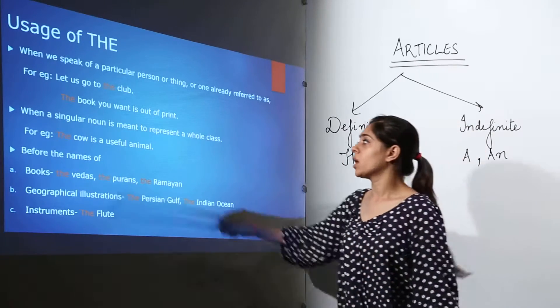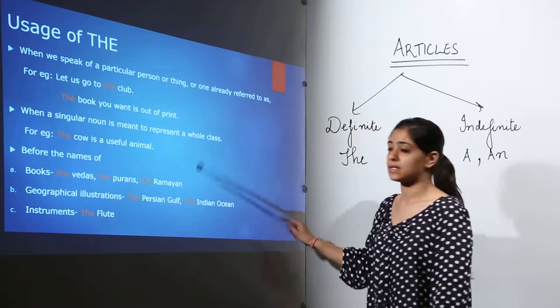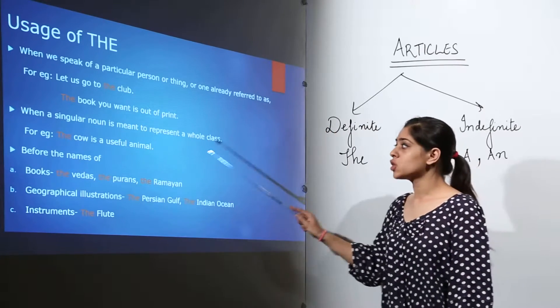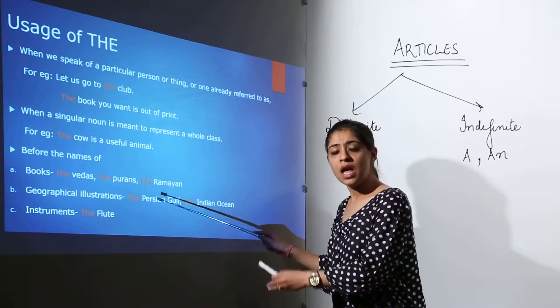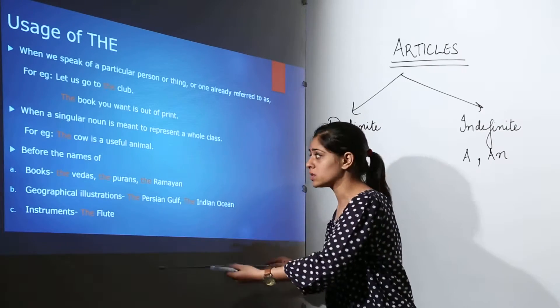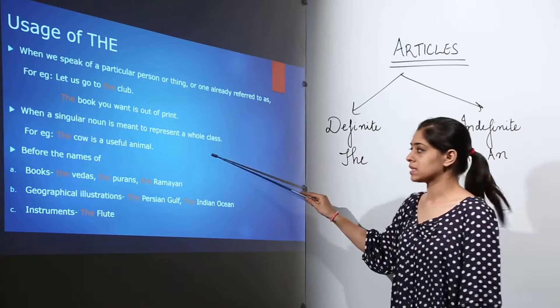The second one: when a singular noun is meant to represent a whole class. For example, the cow is a useful animal. Now here we are talking about a specific animal representing a whole class or the whole breed of cows. So here we use the definite article to define the whole class.